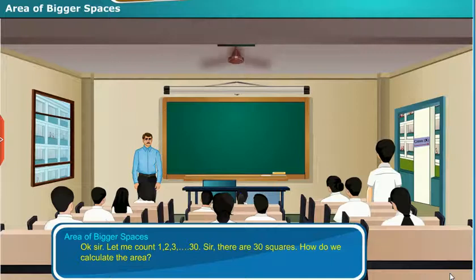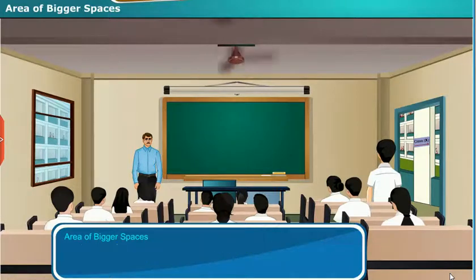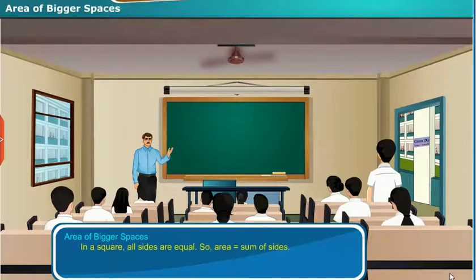Sir, there are 30 squares. How do we calculate this area? In a square, all sides are equal. So, area equal to sum of sides.